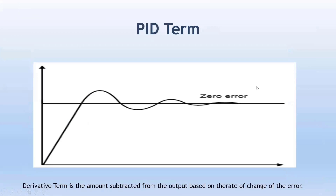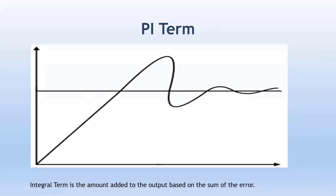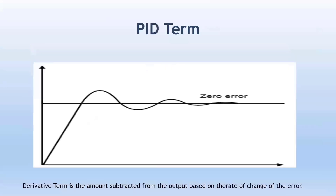There is no system in the market that has no disturbances — disturbance is always a factor in any control loop. To take care of disturbances, or the rate of change of error, you add a D term. The derivative term is the amount subtracted from the output based on the rate of change of error. Most PID loops can be tuned with just P and I terms, but there are some loops that actually need the D term as well.